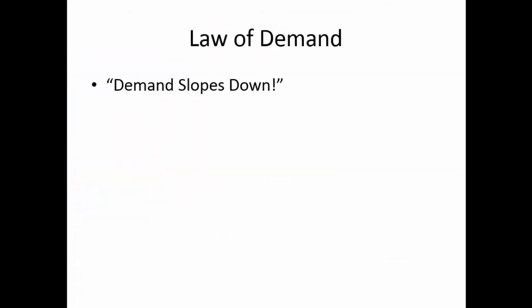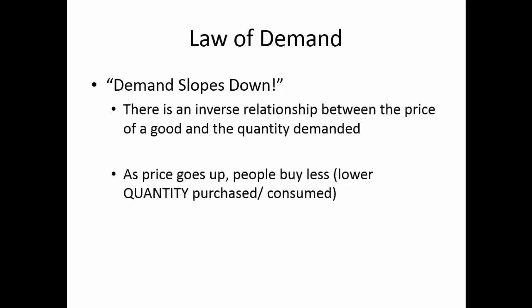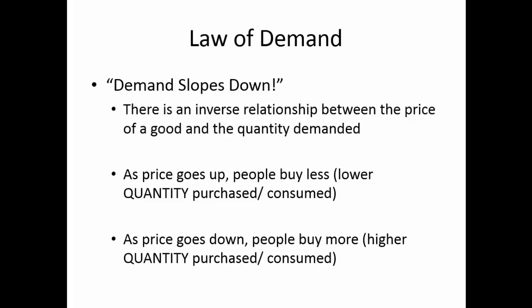Demand slopes down — it's really that simple. The technical definition: there's an inverse relationship between the price of a good and the quantity demanded. As the price of a good goes up, people buy less of it — a lower quantity purchased. And as the price goes down, people buy more of it — a higher quantity purchased. This is always the case, really for all goods at all times.